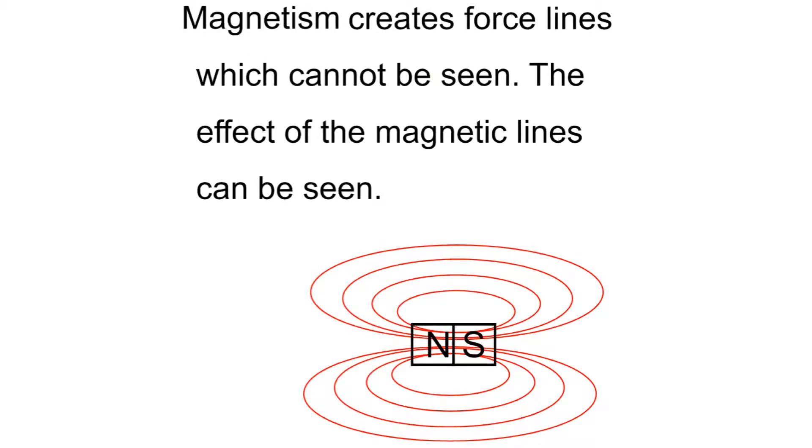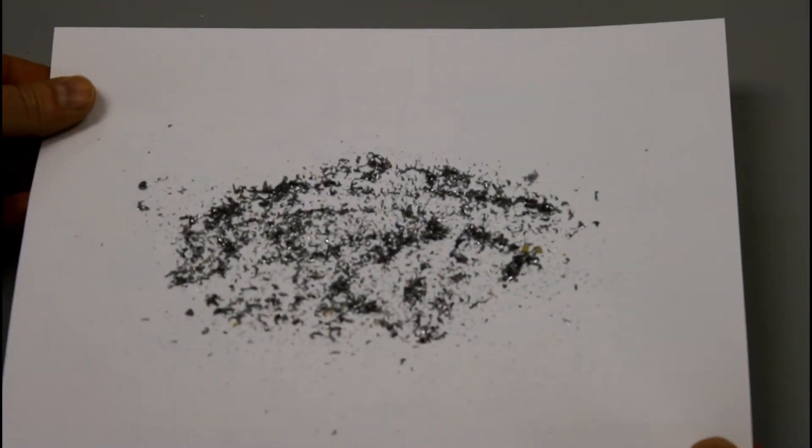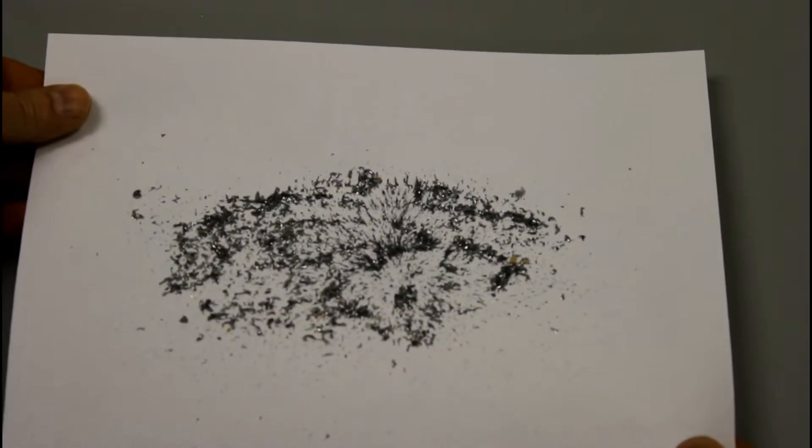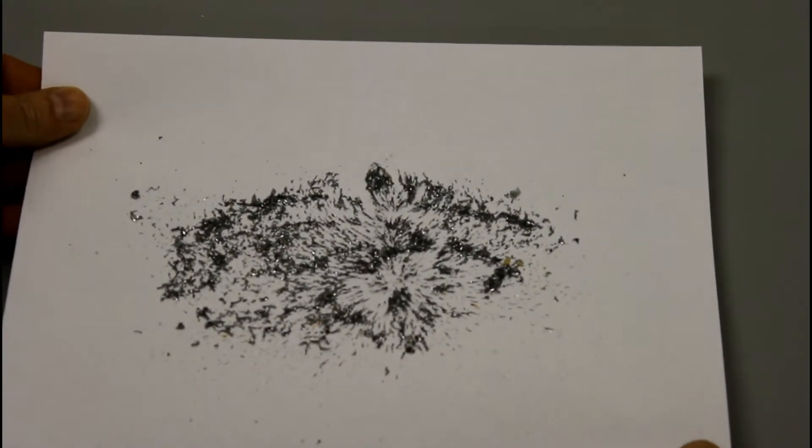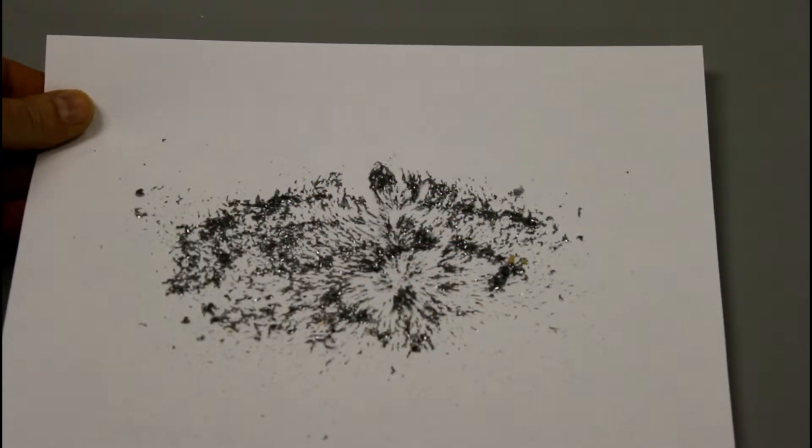Magnetism creates force lines which cannot be seen, but the effects of the magnetic lines can be seen. Here we see a bar magnet. I also have a bunch of metal filings on a piece of paper. As I get this down towards the magnet, I want you to notice that it starts moving these particles around. It actually starts making these lines of magnetism that we talked about. You can see those lines of magnetism.